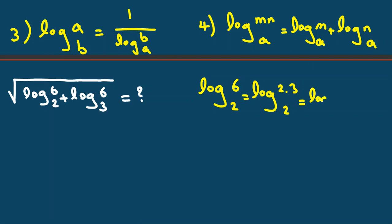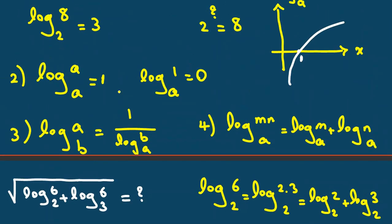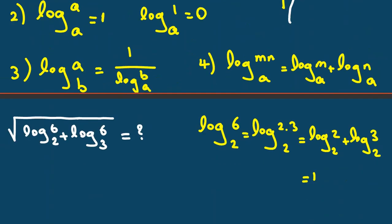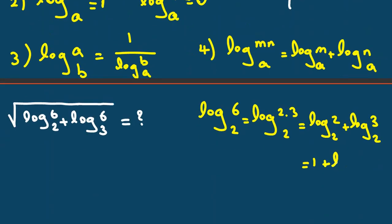So we can say it is log base 2 of 2 plus log base 2 of 3. Log base 2 of 2, we said log base A of A is always 1. It will be 1 plus log base 2 of 3.